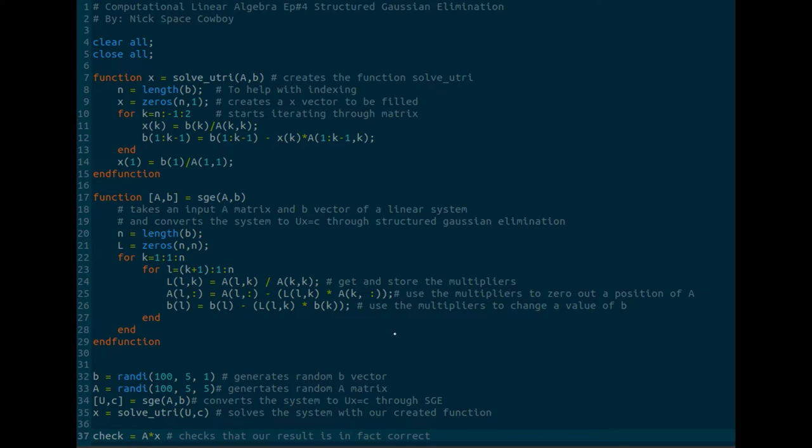If you answered this structured Gaussian elimination function here, you're absolutely correct. Remember, structured Gaussian elimination converts our AX equals B system to the upper triangular system. And so what we're doing is we are returning an upper triangular matrix and a changed B vector when we call this function.